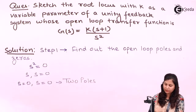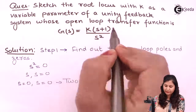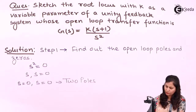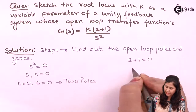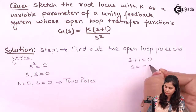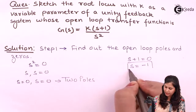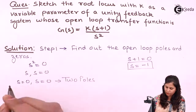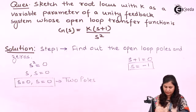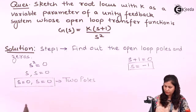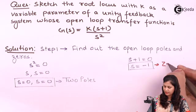To find out the zeros, we equate the numerator polynomial to zero: s + 1 = 0, which gives s = −1. So s = −1 is our one zero, and s = 0, s = 0 are the two poles.